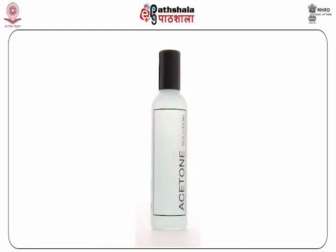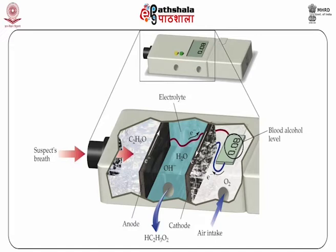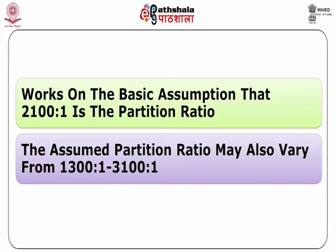Acetone is an interfering compound which may give a false reading of ethanol on some breath testing machines. Fuel cell-based systems are, however, non-responsive to such substances. Homeostatic variables: breath analysers work on the basic assumption that 2100:1 is the partition ratio in converting alcohol measured in the breath to estimate the BAC. But this assumed partition ratio may vary from 1300:1 to 3100:1 or even more among different individuals and within a given individual over a period of time.